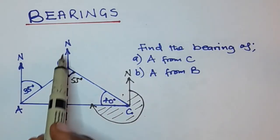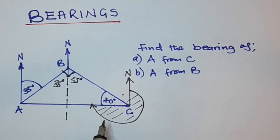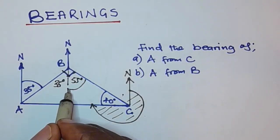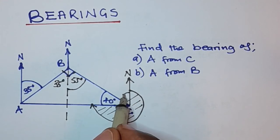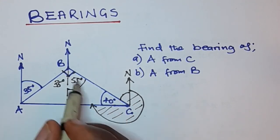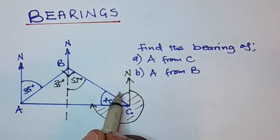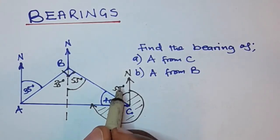Again, if you look at this north line and this north line, they are also parallel lines. So this angle here is going to be equal to this angle, because they are alternate angles. So this angle is also 55 degrees.